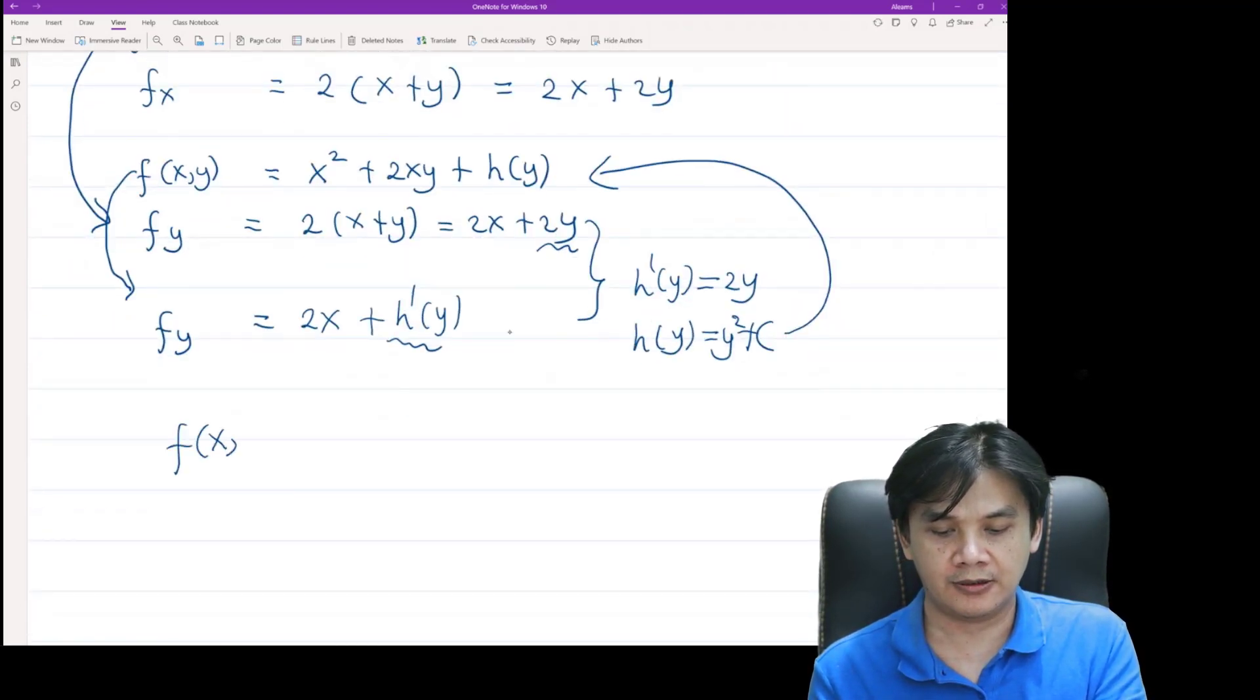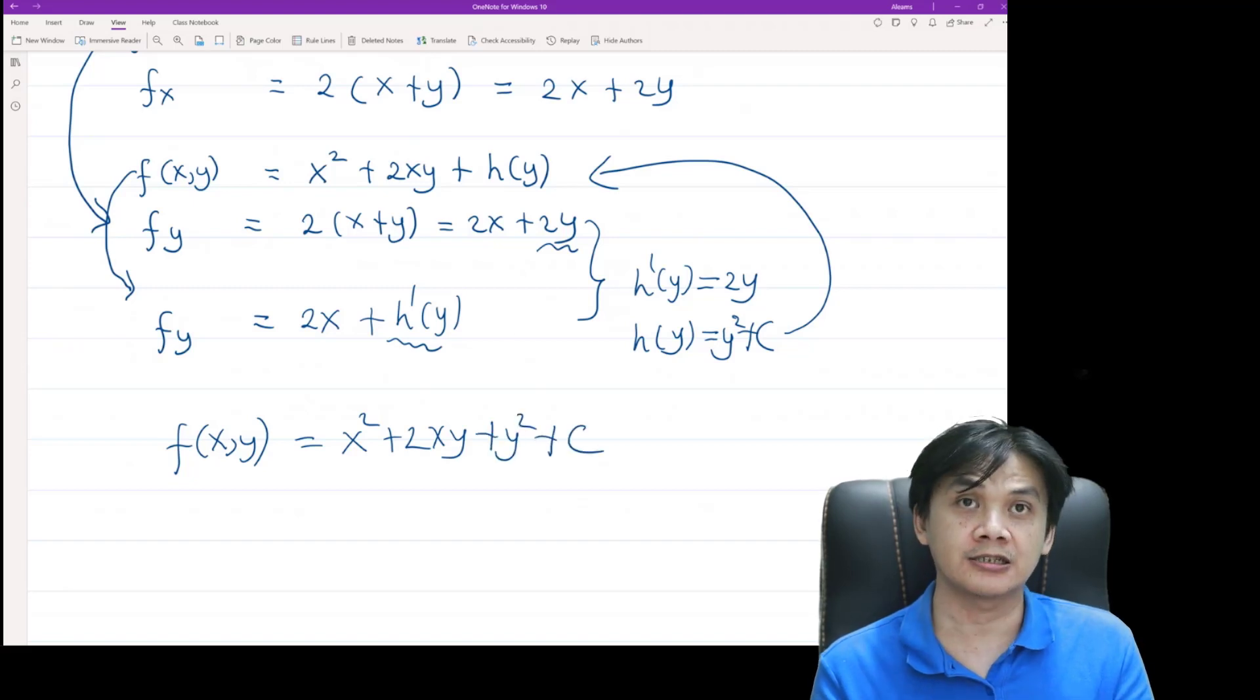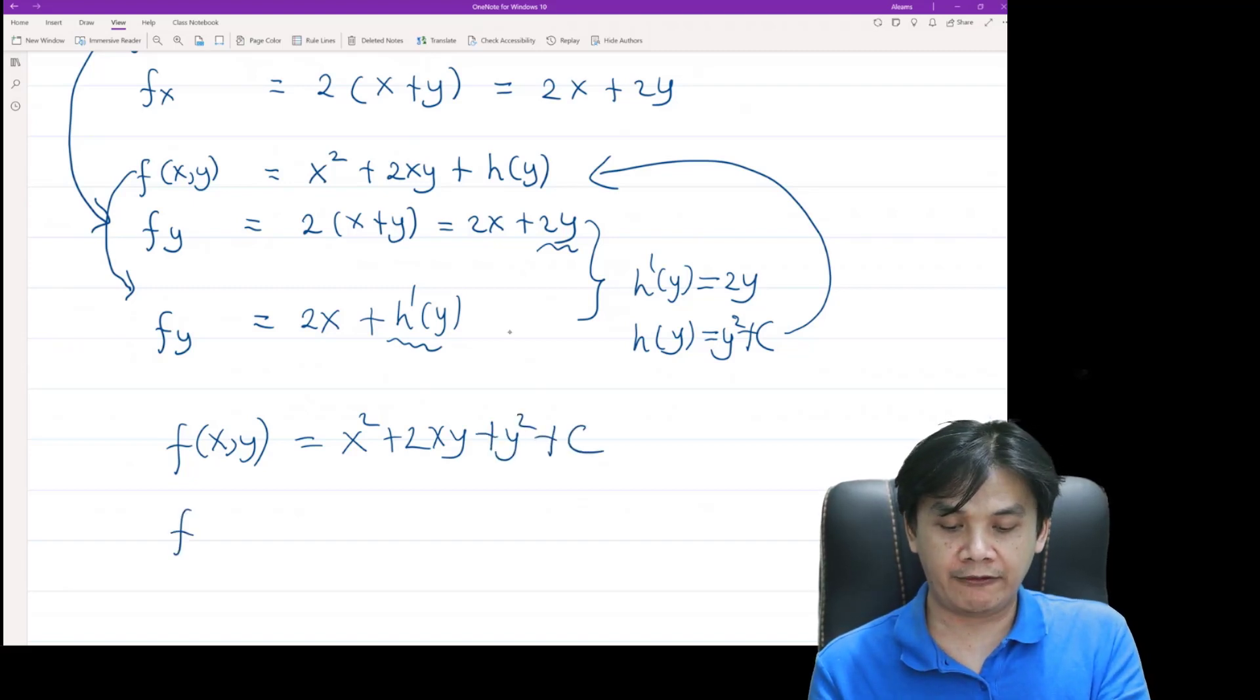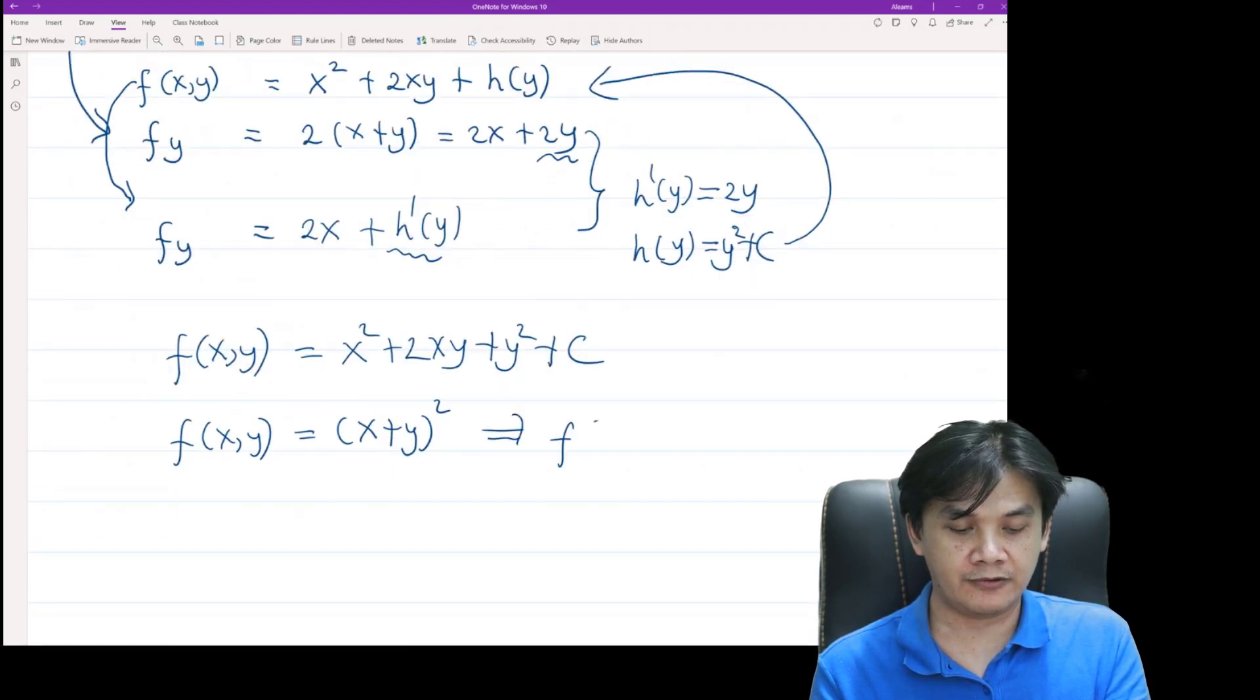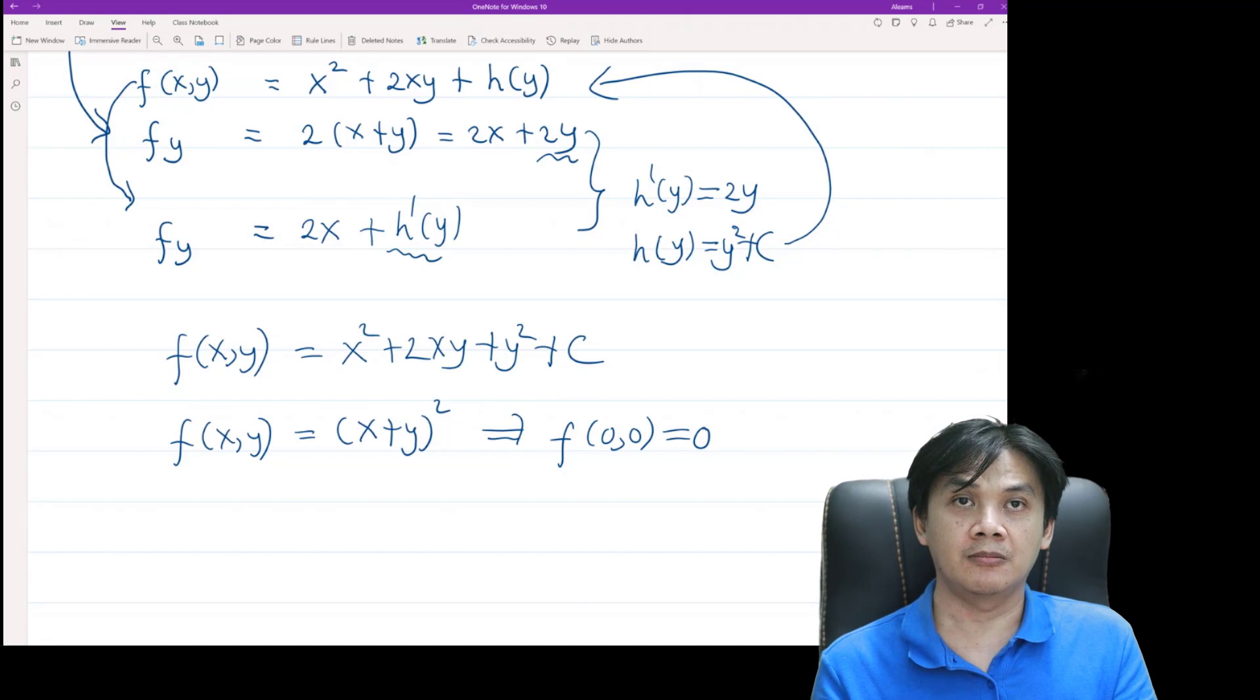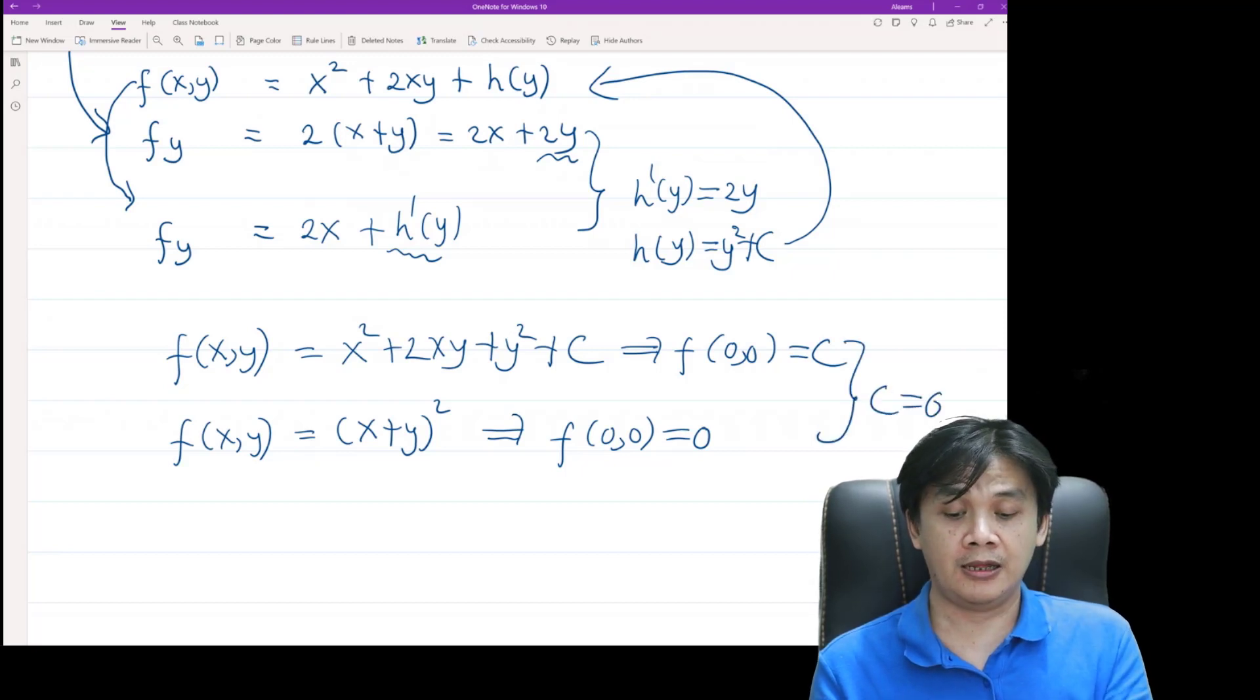We have f(x,y) is equal to x² + 2xy + y² + constant. But remember that f is equal to (x+y)². In particular, f(0,0) is equal to 0. Meanwhile, here we have f(0,0) is equal to c. Therefore, c is equal to 0, and hence...